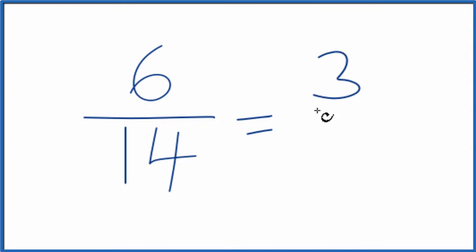6 divided by 2, that's 3, and 14 divided by 2, that's 7. So we end up with 3/7.